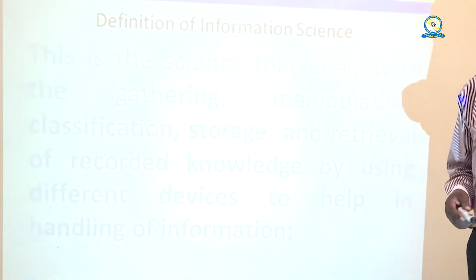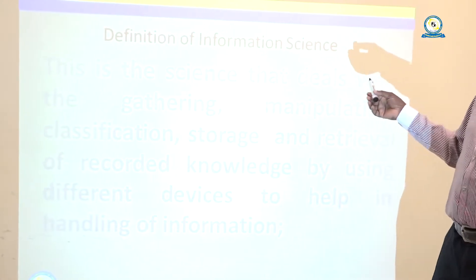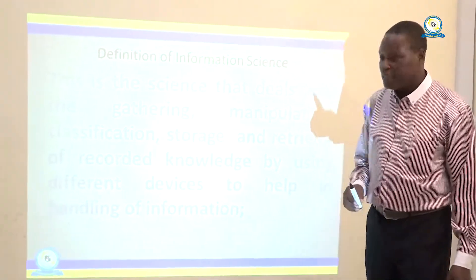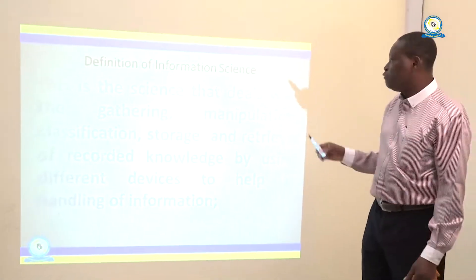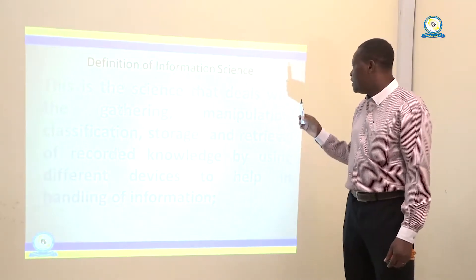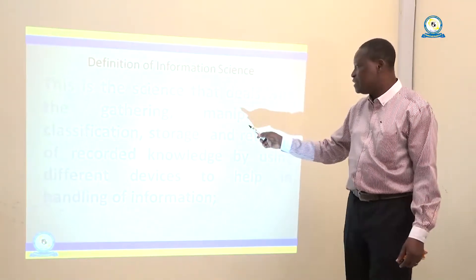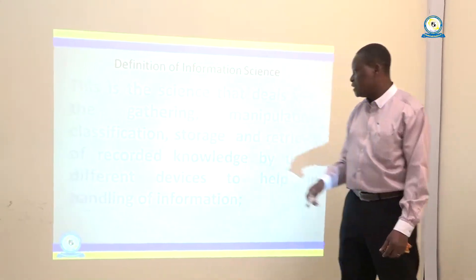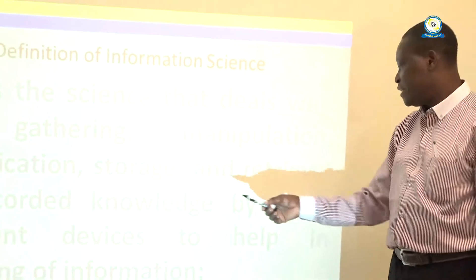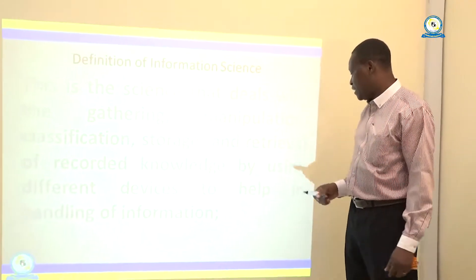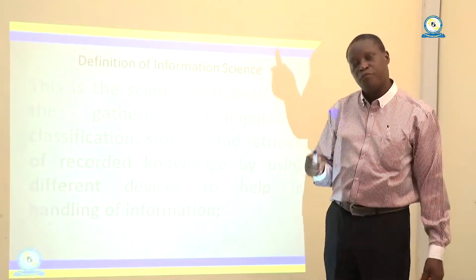Let us move to the definition of information science. Information science is the science that deals with the gathering — like collection — multiplication, classification of information, storage of information, and retrieval of recorded knowledge by using different devices to help in the handling of information.